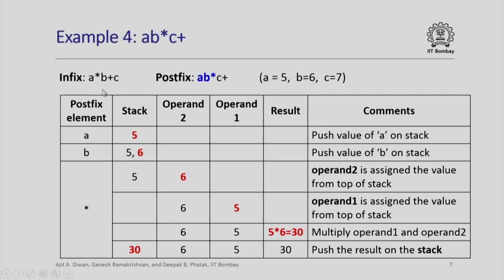Here is another example: A star B plus C as an infix expression, which becomes A B star C plus in postfix. Again we assume the same values. As we encounter A and B we push 5 and 6 onto the stack, then we encounter star. This operation is performed on the two operands on the stack. They go respectively to operand 2 and operand 1, and this operation is performed resulting in a value 30. This multiplication result, 30, is pushed onto the stack. Note that on the stack we have only this value 30 now, because we have traversed up to this point.